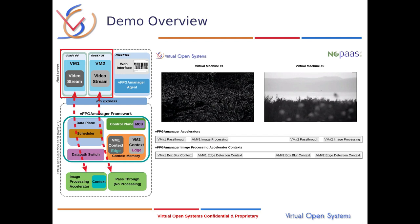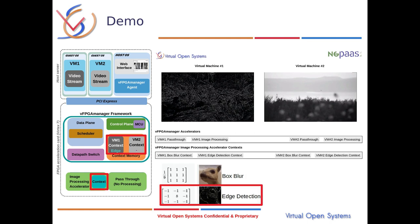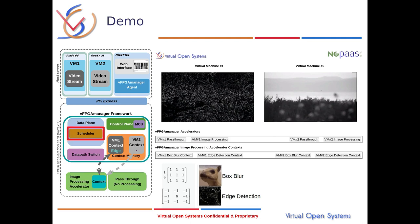These virtual machines stream a video to the FPGA. The processed video is sent to the web interface. We will start the demo by having two virtual machines streaming black and white videos to the FPGA. VM1 is streaming to the image processor and VM2 streams to the pass-through, which performs no processing. The context of the image processor is an array that determines the type of processing. In our demo we will showcase the box blur and edge detection image processors. A different context is applied from memory depending on which VM has priority from the scheduler. The virtual machines can update the context to box blur or edge detection by updating the context memory. This is done through our web interface.